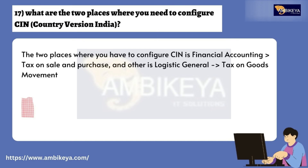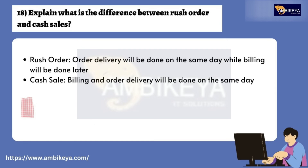Question number seventeen: What are the two places where you need to configure CIN (Country Version India)? The two places where you need to configure CIN are: Financial Accounting > Tax on Sales and Purchase, and Logistics General > Tax on Goods Movement.